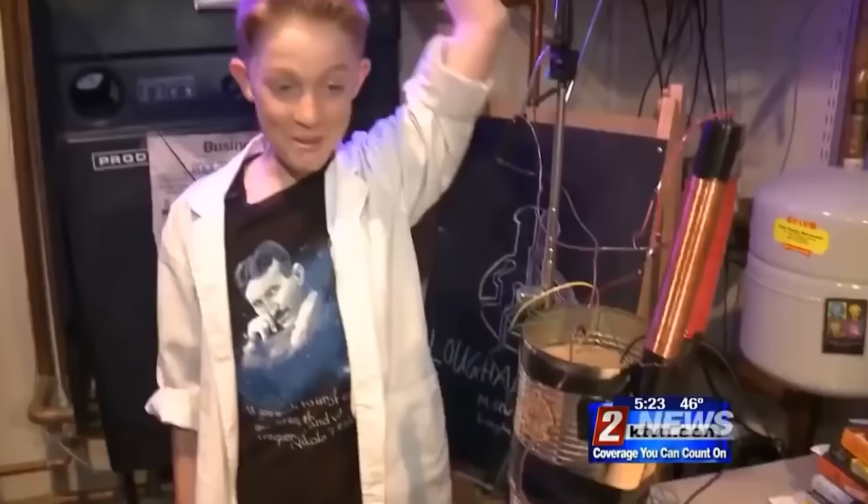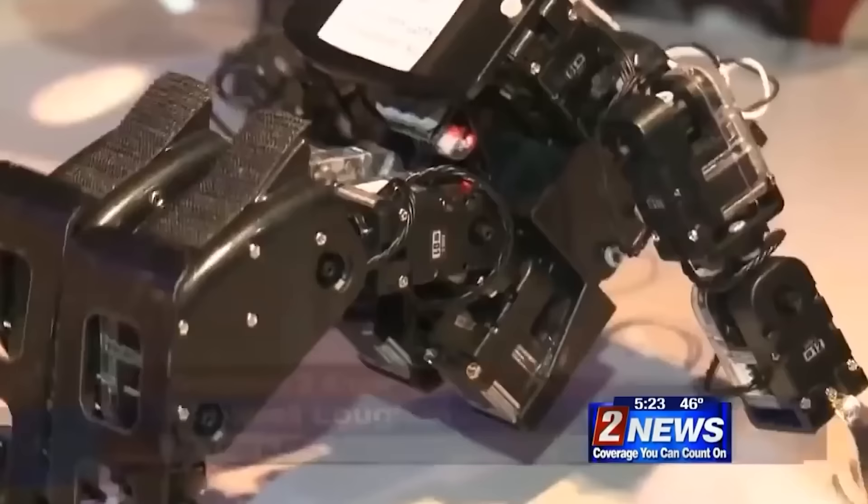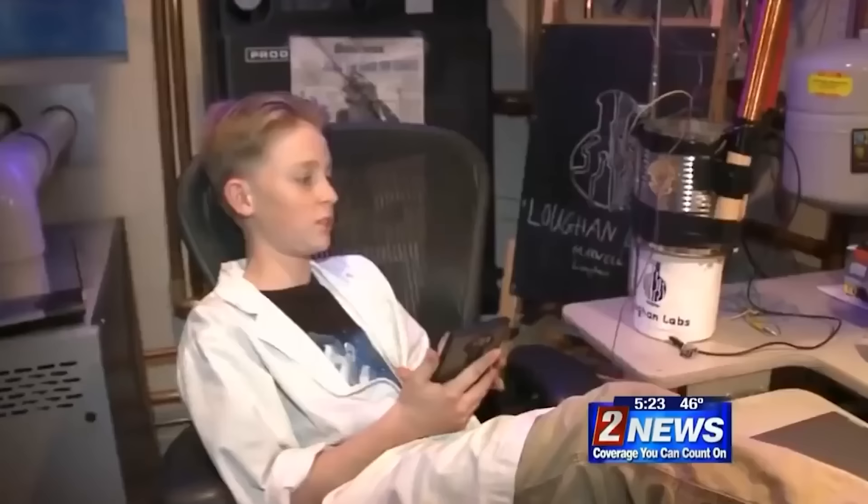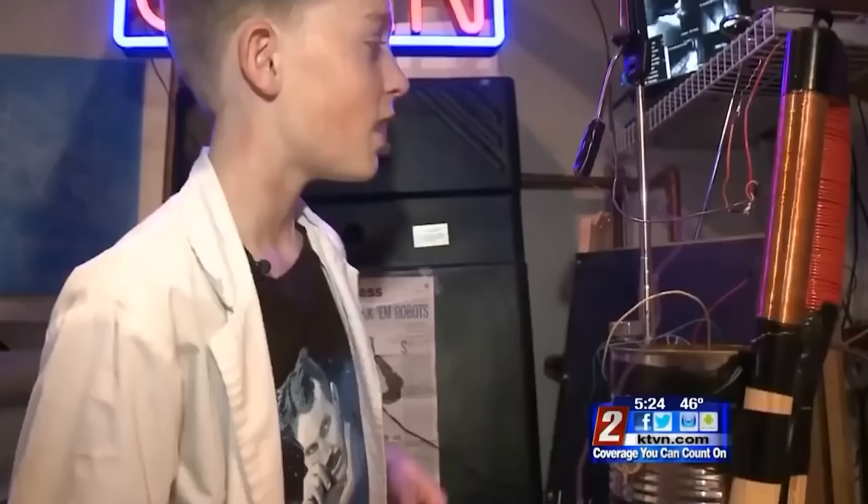Not only is Max an adept theorist, but he is also a prodigious inventor. Surprisingly, at the tender age of 13, he conceived a groundbreaking free energy device. With unwavering enthusiasm, Max demonstrated how this device could revolutionize the way people live across the globe. His invention held the promise of restructuring human existence itself.